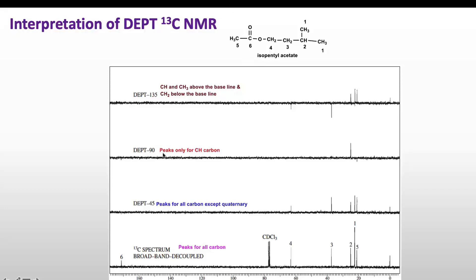Now taking DEPT 90, which shows only peaks for CH carbons, we see only one peak — indicating we have only one CH carbon in our molecule. All other peaks are missing here. This peak belongs to carbon number two, which is the only CH-containing carbon in our molecule.